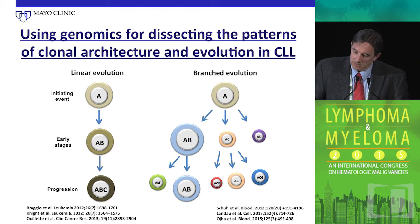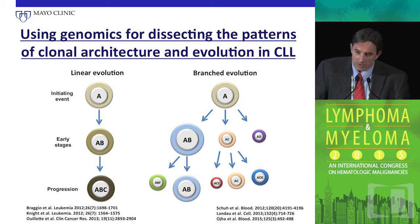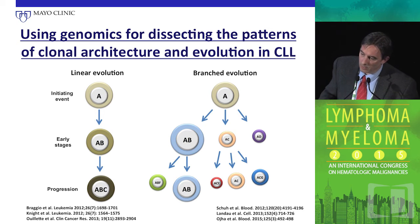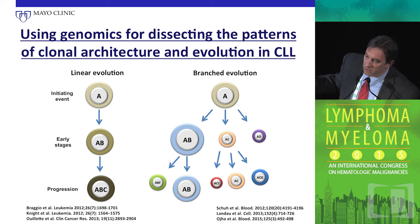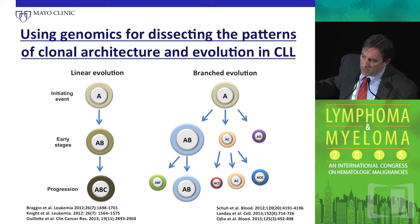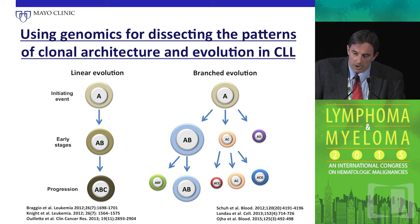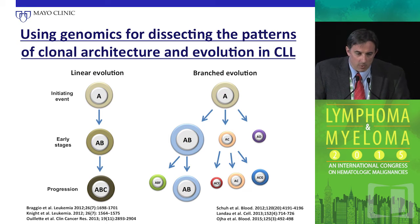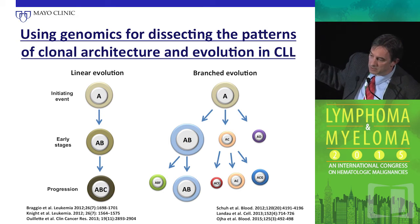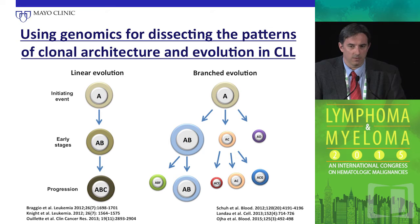This drives us to understand the clonal architecture of CLL. Over the last three years, our group and others have identified two types of clonal architecture: linear evolution, where a single clone acquires additional abnormalities or mutations over time, and branched or multi-branched evolution, where multiple genetic subclones evolve in parallel, sharing some abnormalities but differing in others. More and more we are seeing that most cases fall into the multi-branched category — the most challenging, requiring us to rethink how to target those cases.